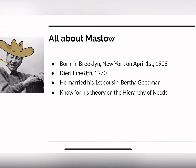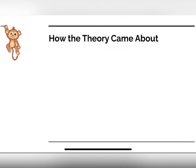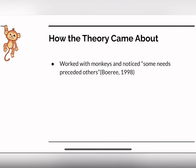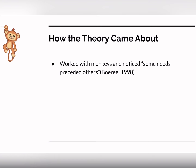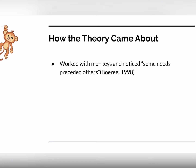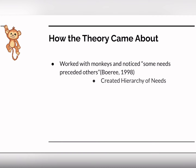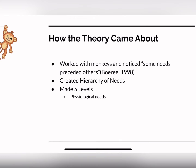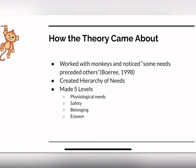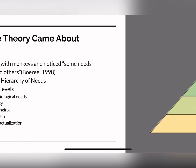He was also known for his theory on the hierarchy of needs. Early in his career, he worked with monkeys and noticed that some needs preceded others. For example, if you're hungry and thirsty, you're going to get water first because thirst is a bigger need. But if you're in danger and thirsty, you're going to want to get out of danger before you get water. Through this, he created the hierarchy of needs, which has five levels: physiological needs, safety, belonging, esteem, and self-actualization.